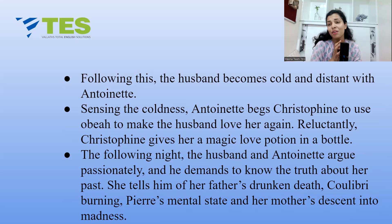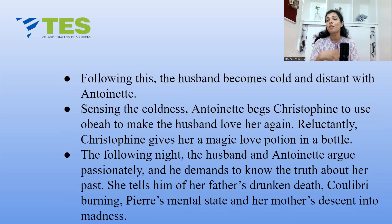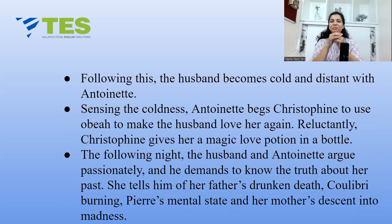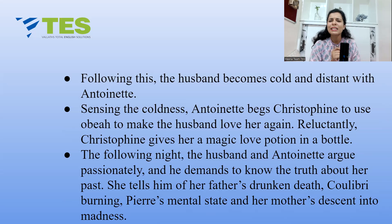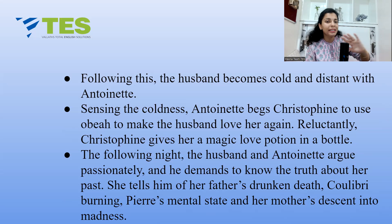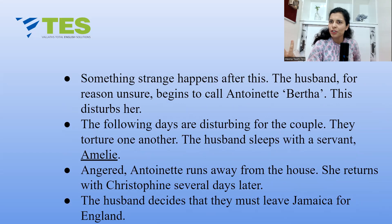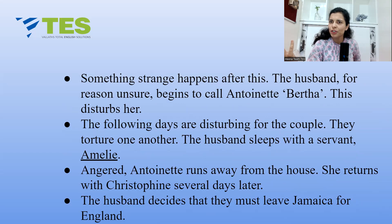Following this letter, the husband becomes cold and distant. Sensing this, Antoinette begs Christophine to use Obeah to make the husband love her again. Reluctantly, Christophine gives her a bottle of magic love potion. The following night, the husband and Antoinette argue passionately — she tells him of her father's drunken death, Coulibri's burning, Pierre's mental state, and her mother Annette's descent into madness. After hearing all this, the husband is convinced that madness runs in her family.